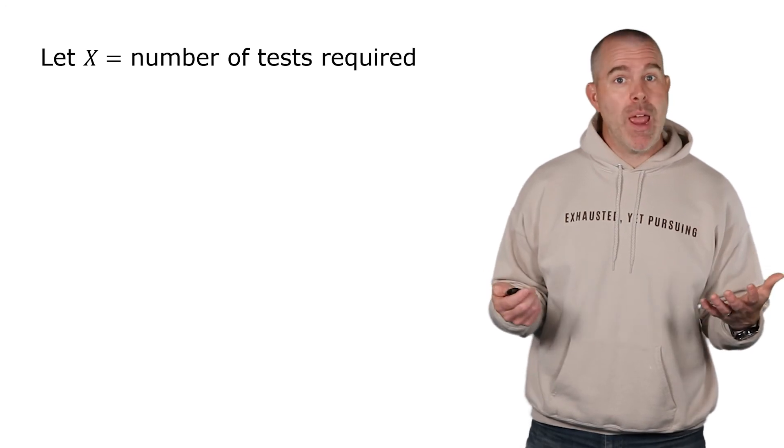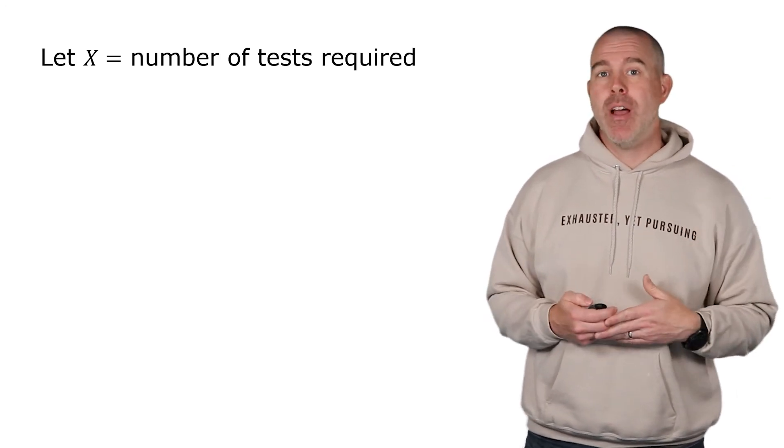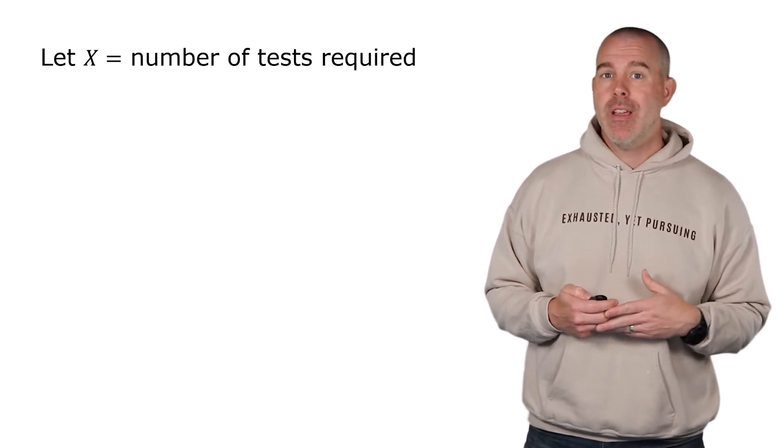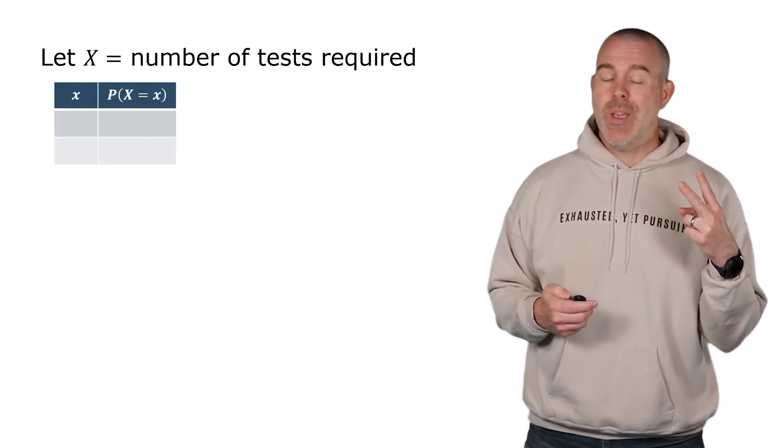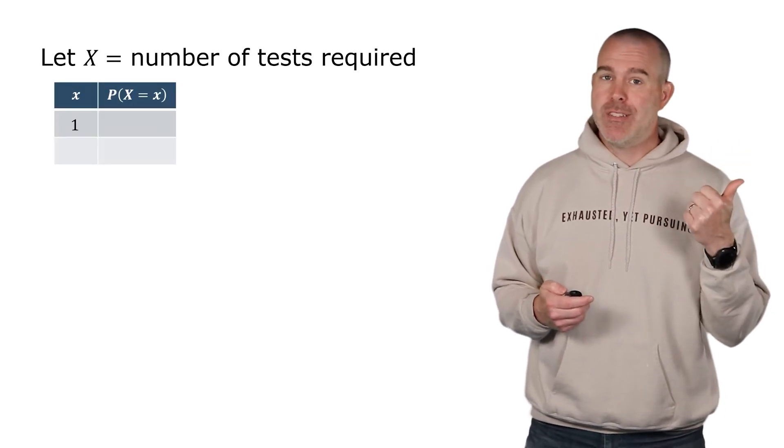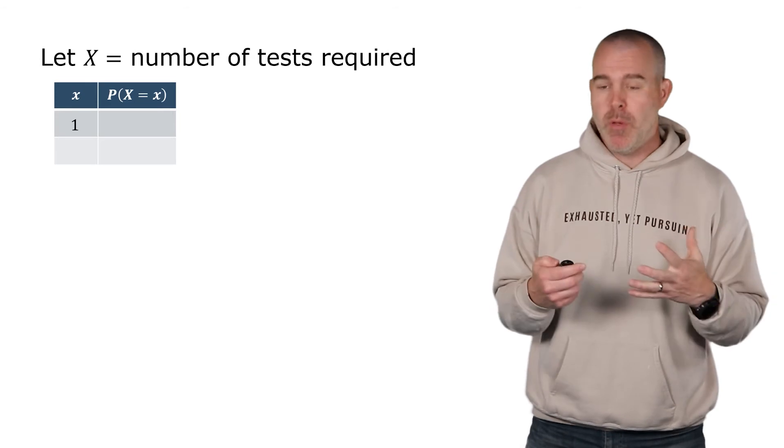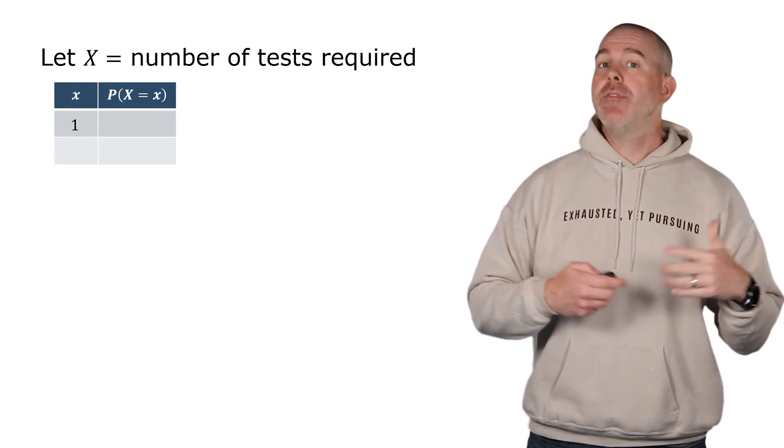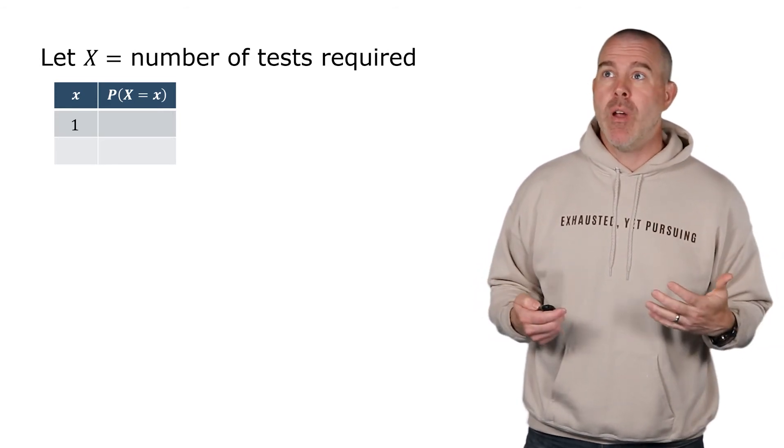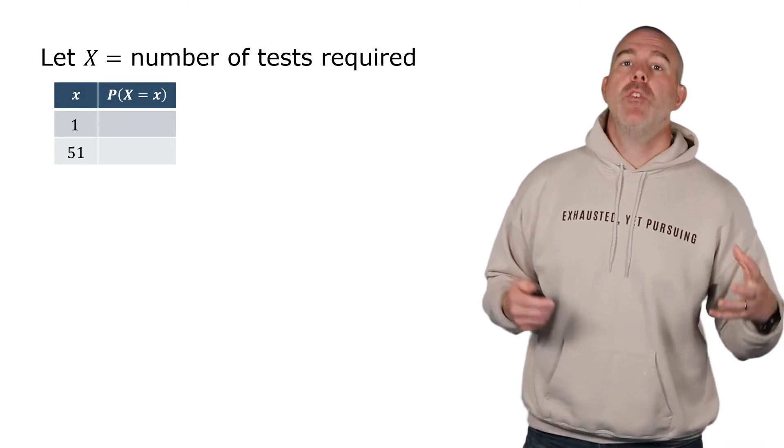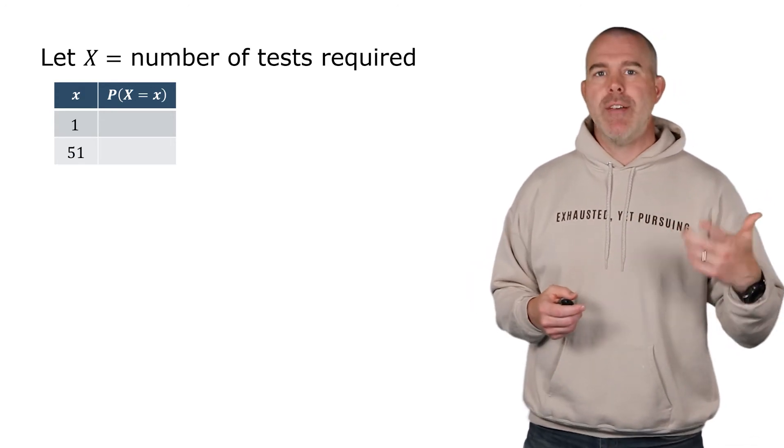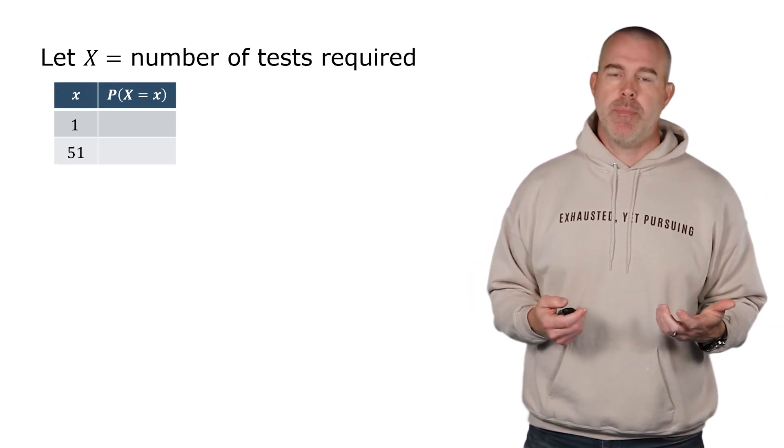The question then is, how many tests on average would we expect to run in the long run if we do this? Let's make a random variable. Let's let x be the number of tests required. There's two possibilities. We could either have one test, meaning it's negative, so you pool them all together, you run one test, negative, done. Or you have to run 51. You have to do the pooled test, but then you also have to test them all individually.